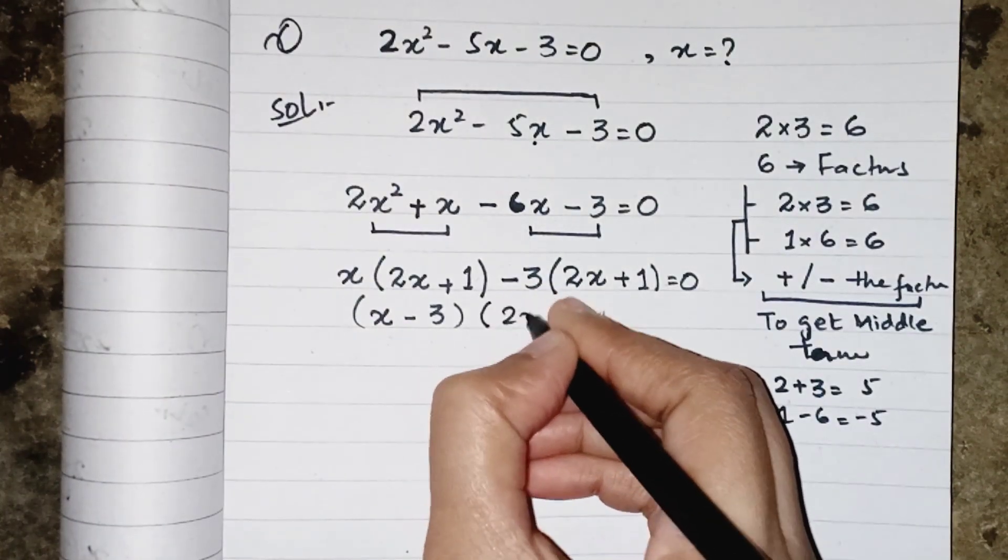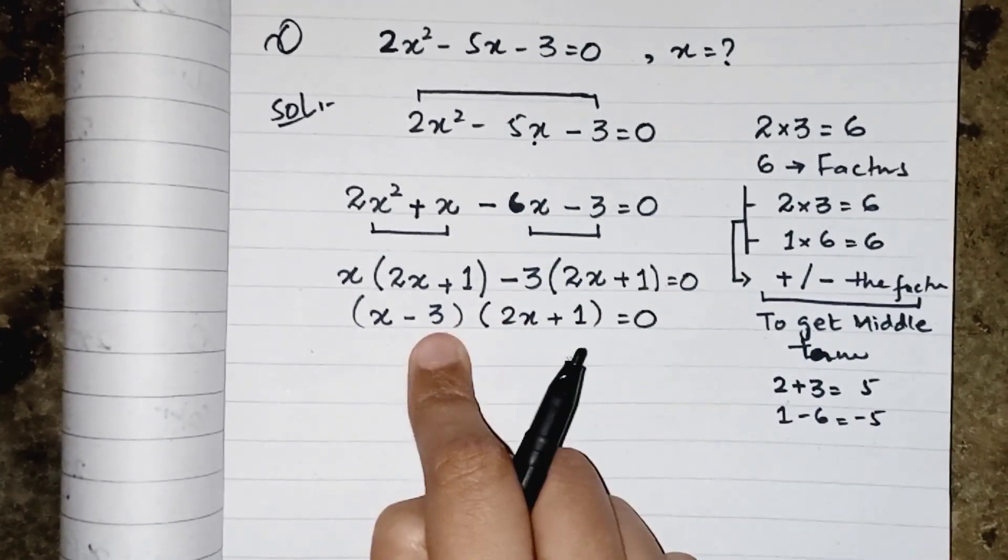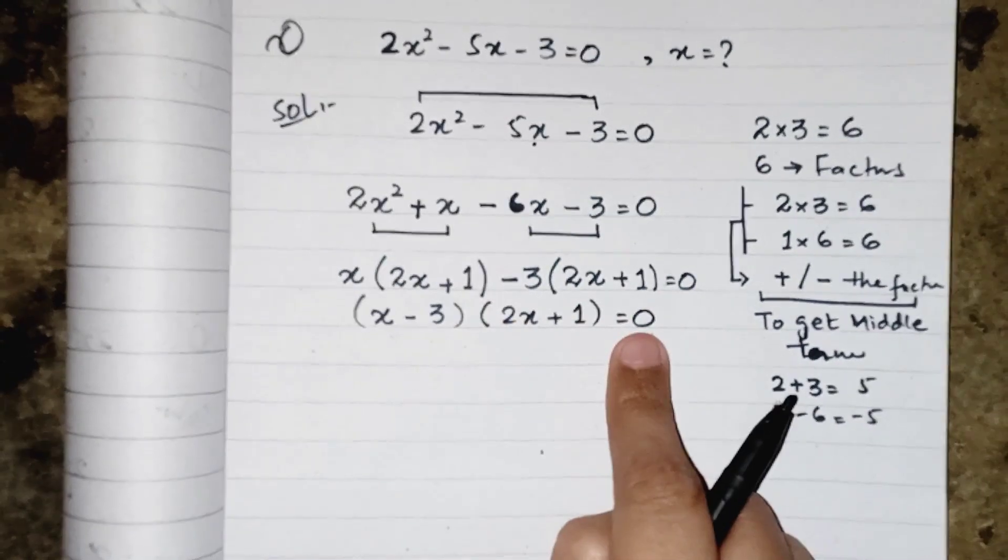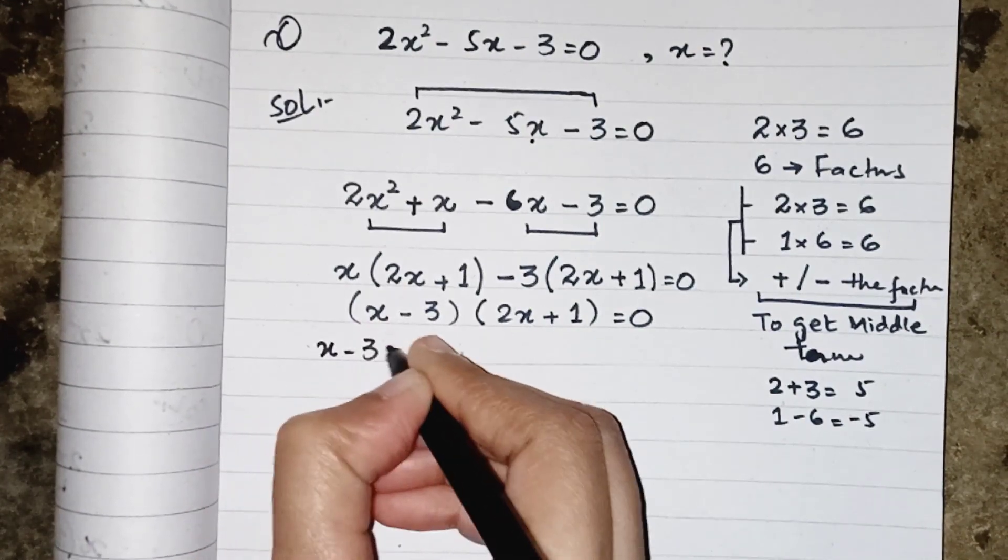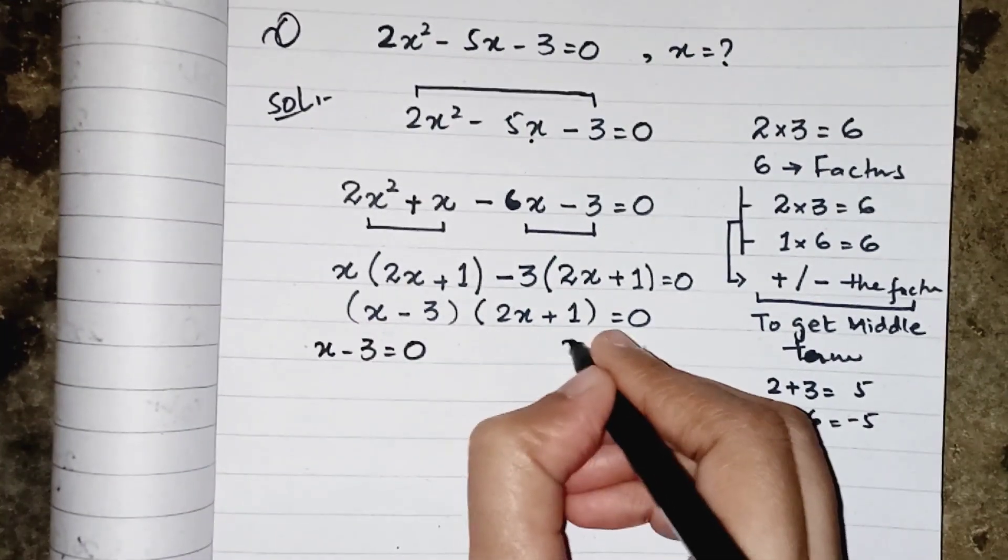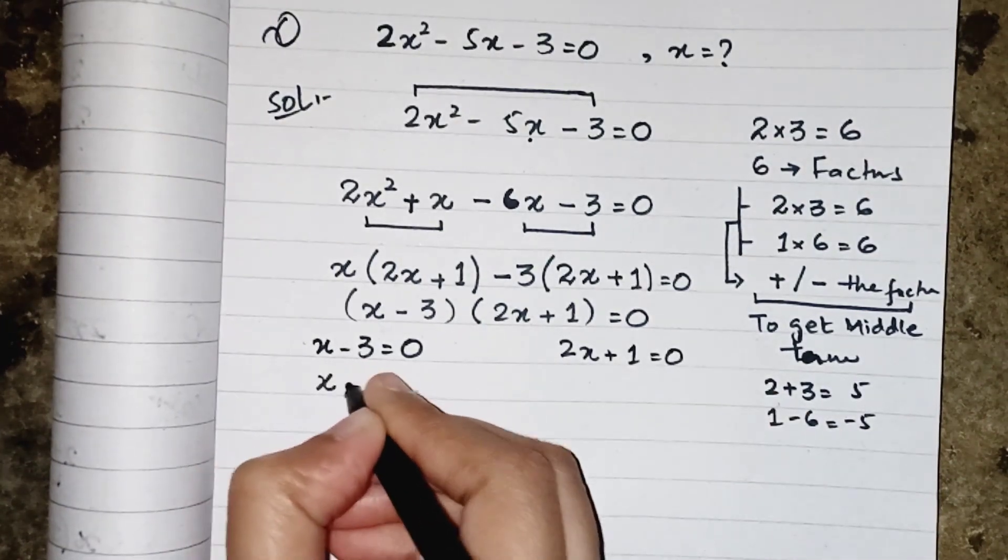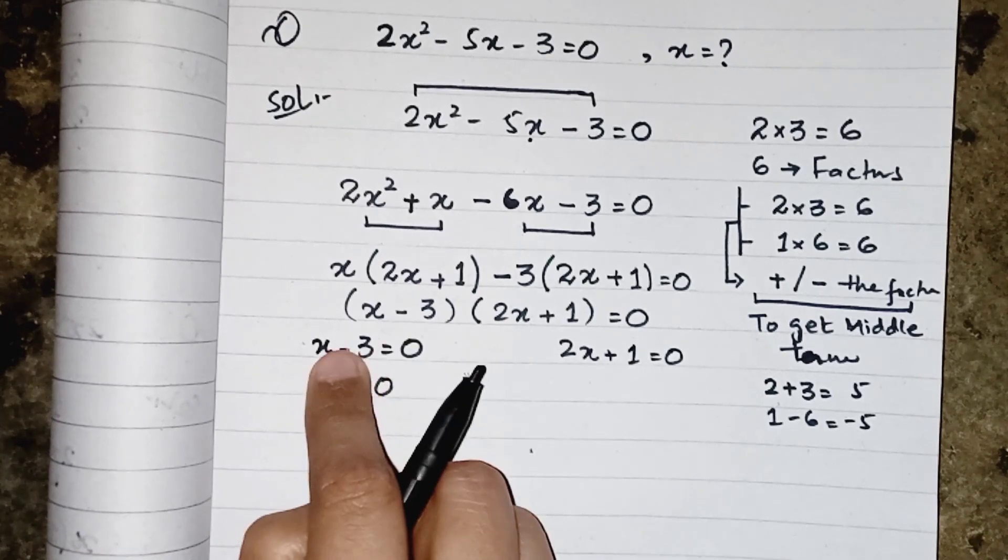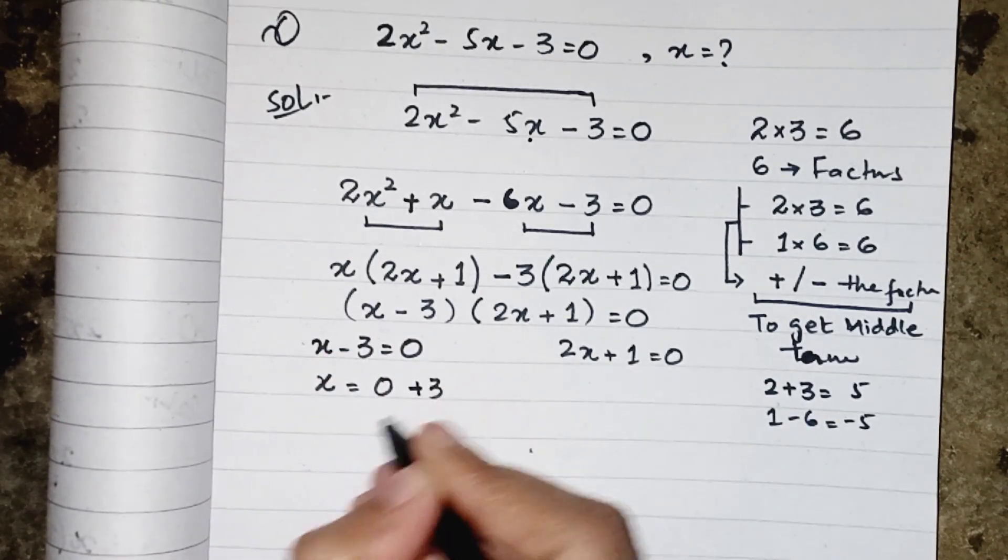So we have 2x plus 1 equals to 0. Both brackets are multiplied to each other and equated to 0, so we have to separate them. x minus 3 equals to 0, on another hand 2x plus 1 equals to 0.